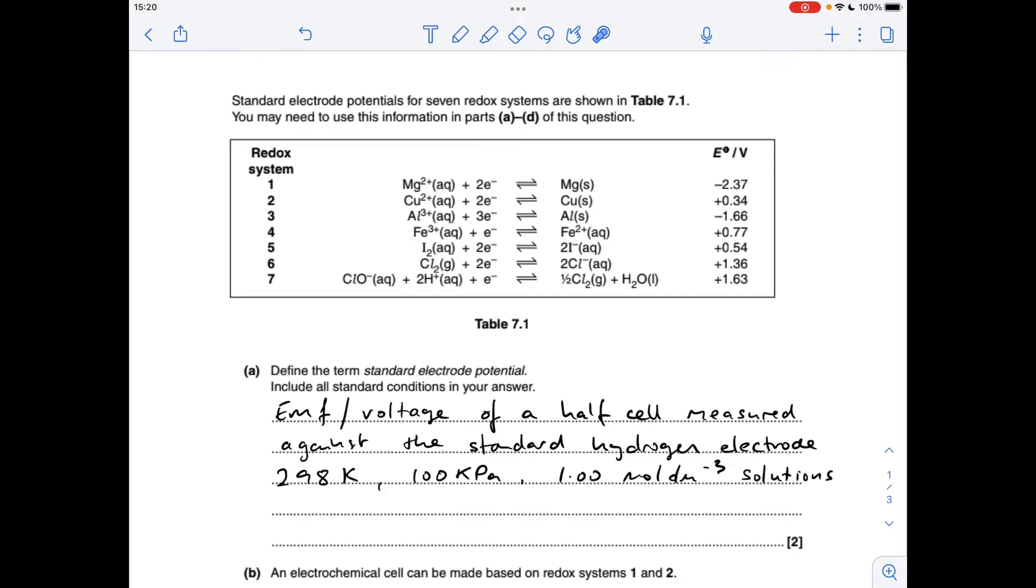Okay, so starting with the definition for standard electrode potentials. It's the EMF or the voltage of a half cell measured against the standard hydrogen electrode, and the standard conditions are 298 Kelvin, 100 kilopascals, and 1 mol per decimeter cubed solutions.